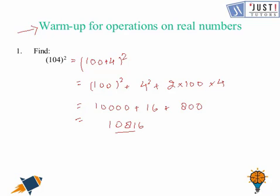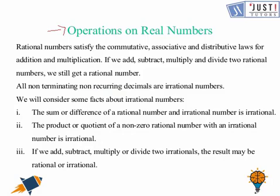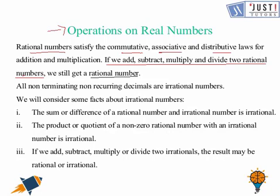Now we move ahead to our topic, which is about operations on real numbers. Rational numbers satisfy commutative, associative and distributive laws for addition and multiplication. And if we add, subtract, multiply and divide two rational numbers, the answer is always a rational number. But what about irrational numbers?